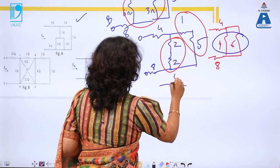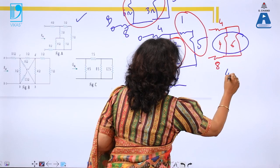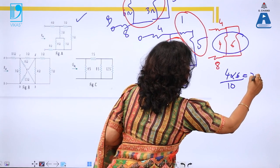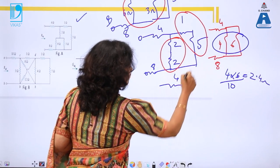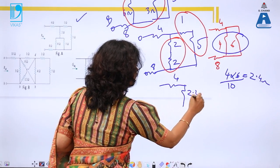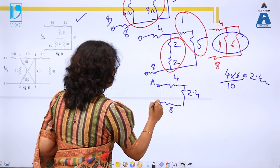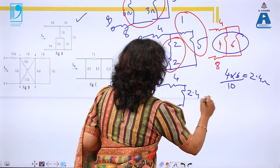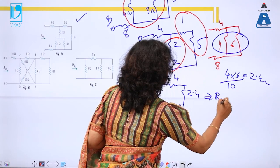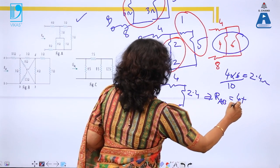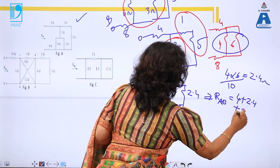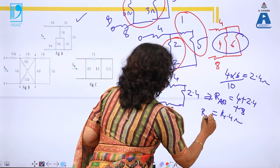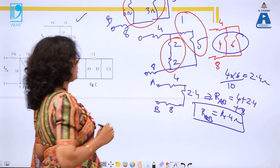4 Ω and 6 Ω in parallel gives (4 × 6)/(4 + 6) = 24/10 = 2.4 Ω. Replacing that combination with 2.4 Ω, the circuit now has 4 Ω, 2.4 Ω, and 8 Ω all in series. Therefore, R_AB = 4 + 2.4 + 8 = 14.4 Ω. That is the final answer.